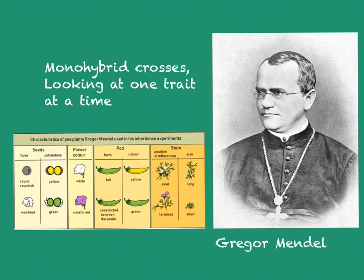The first person to research genetics was Gregor Mendel, and he was an Austrian monk who chose peas, probably because most monasteries had a large vegetable garden, so he probably spent a lot of time in the garden. Peas have a huge advantage in that they have very easily observable traits, such as the ones shown on the side here.